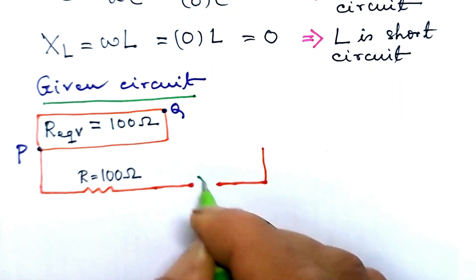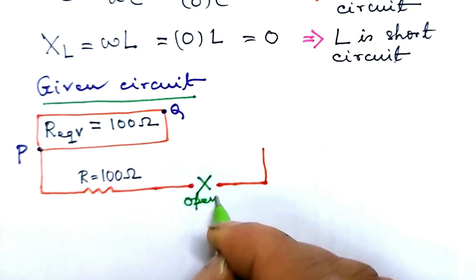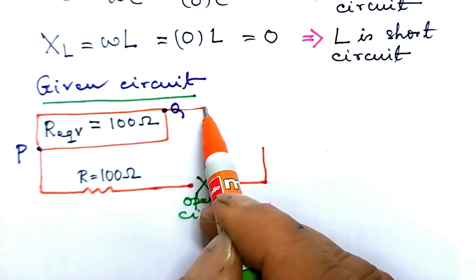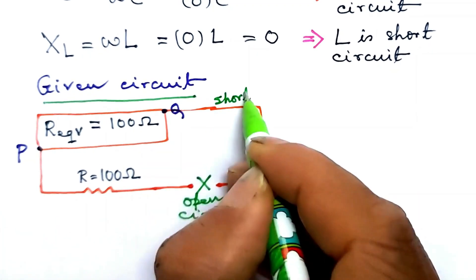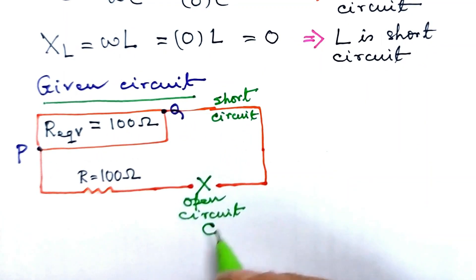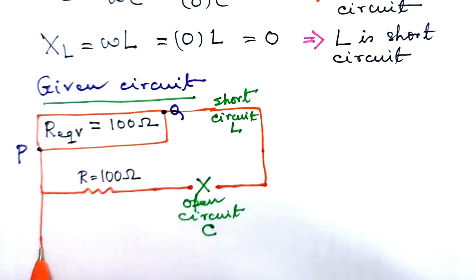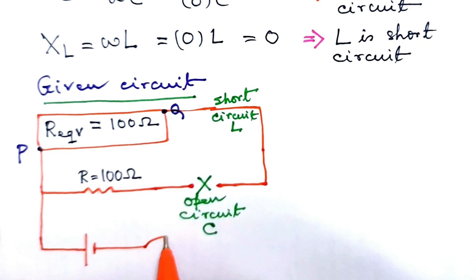Circuit is open here as c acts as open circuit, and l here is a short circuit. Now complete the entire circuit. This is the emf and this is the switch s.